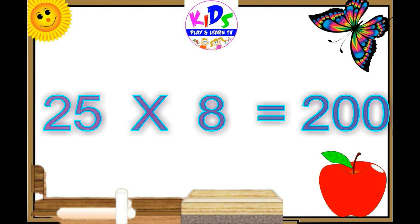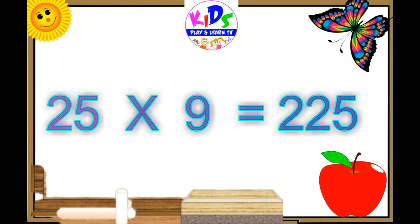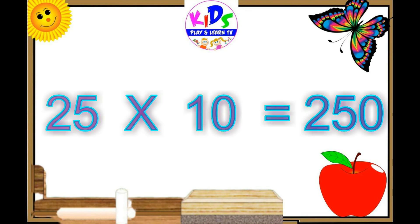25 eights are 200, 25 nines are 225, 25 tens are 250.